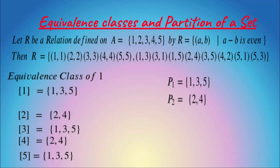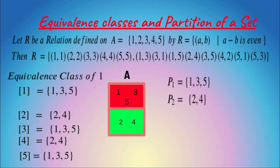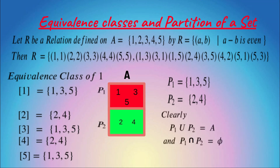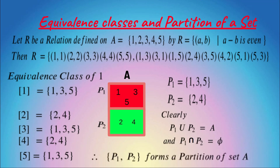Clearly, P1 and P2 — their union is set A, and their intersection is the null set. P1 and P2 form a partition of set A. It is called a partition: no elements in common and the union is the full set.